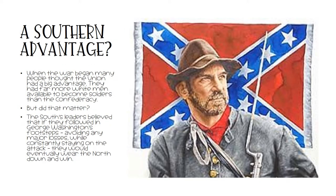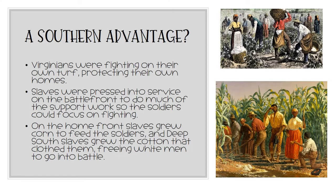When the war first began, many people thought the Union had a big advantage. They had far more white men available to become soldiers than the Confederacy. But the South's leaders believed that if they followed in George Washington's footsteps, avoiding any major losses while constantly staying on the attack, they would eventually wear the North down and win the war. Virginians were fighting on their own turf, protecting their own homes. Their slaves were pressed into service on the battlefront to do much of the support work so that the soldiers could focus on the fighting. On the home front, slaves grew corn to feed the soldiers, and deep South slaves grew the cotton that clothed them, freeing white men to go into battle.